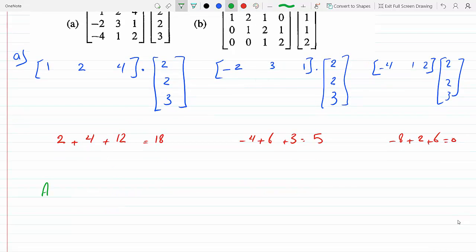This one will be 0. So that means my final answer will be, these are matrices of course, 18, 5, 0.